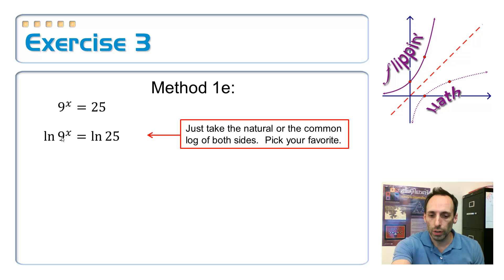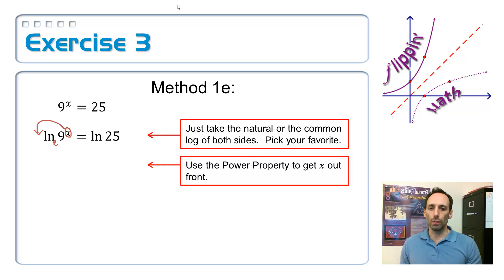This is, over here on the left, is implied to be a base of e, and that's a 9, so they don't cancel each other out. But what I can do is I can bring this x out to the front by the power property of logarithms. Bring that x out to the front, and now the natural log of 9 is just a number that's being multiplied by x. In order to get rid of it, you just divide it over to the other side.